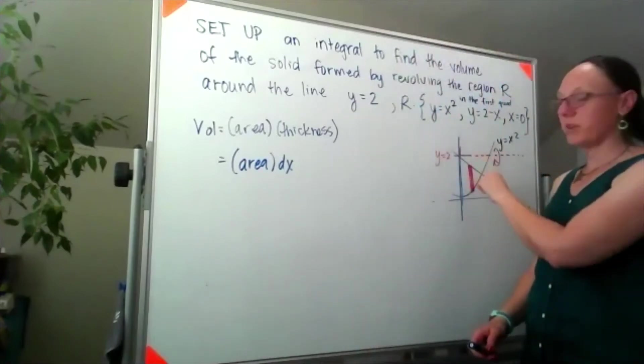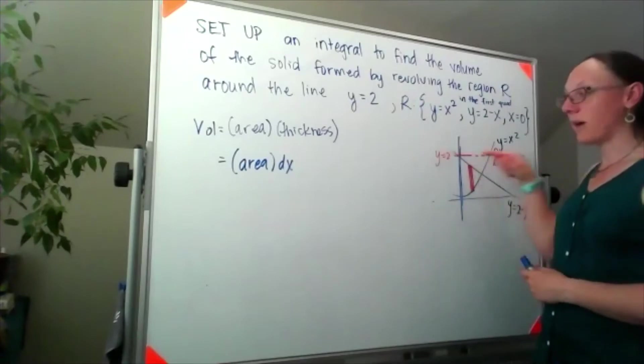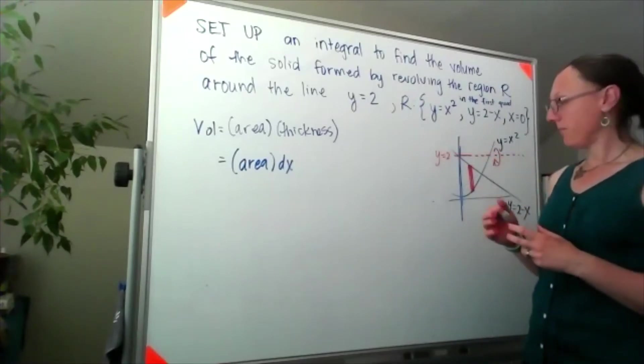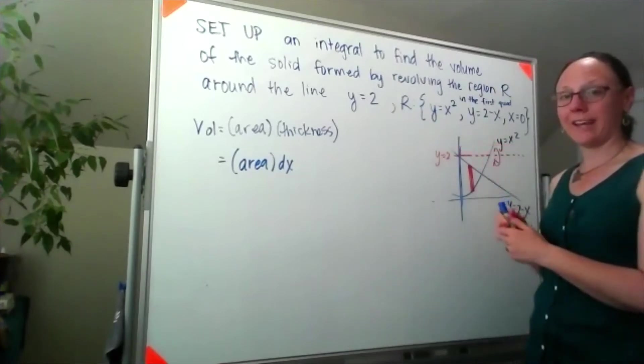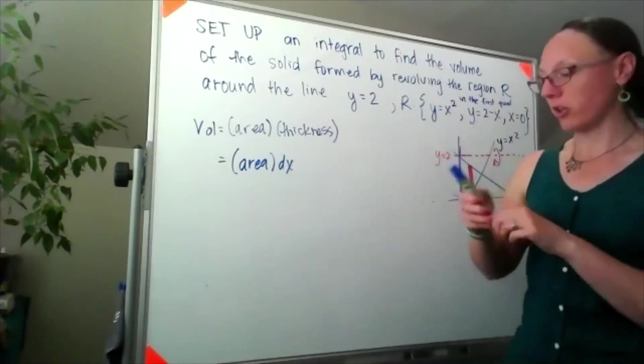Now I can see with this as my arbitrary cross-section, if I spin this around the line y equals 2, it won't be sort of solid. This is going to have a little bit of a hole in the middle when I spin that around, which means when we set up our volume...